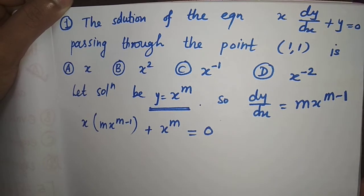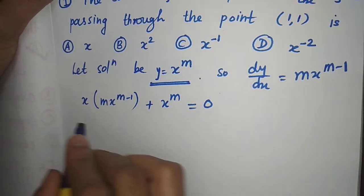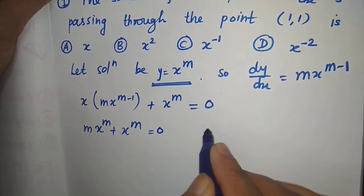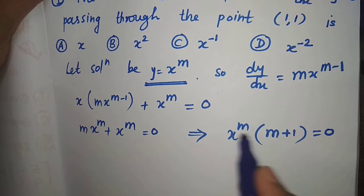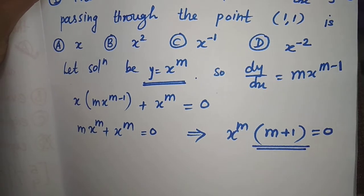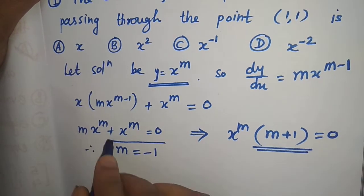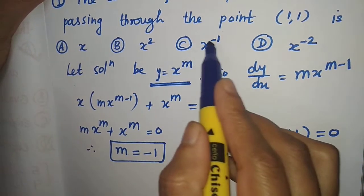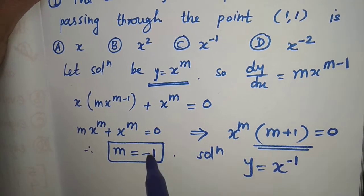Now just solve this equation to get the value of m. This simplifies to x raised to m into m, plus x raised to m equal to 0. Take x raised to m common and remaining is m plus 1 equal to 0. Since x raised to m cannot be 0, m plus 1 must be 0, and therefore m is equal to minus 1.